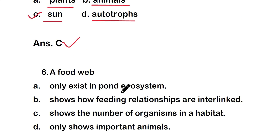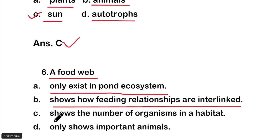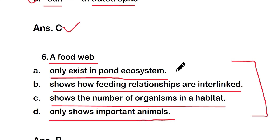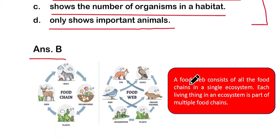Question number six: A food web is — option A: only exists in pond ecosystems; option B: shows how feeding relationships are interlinked; option C: shows the number of organisms in a habitat; or option D: only shows important animals. The right answer is option B — a food web shows how feeding relationships are interlinked.